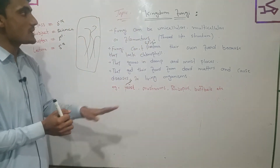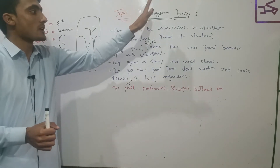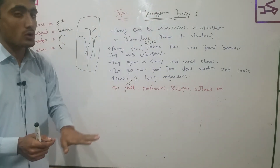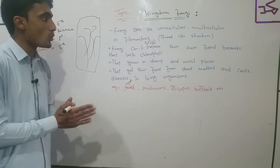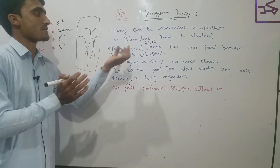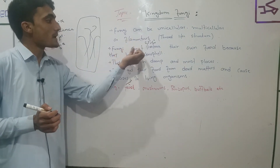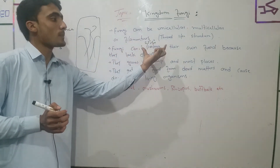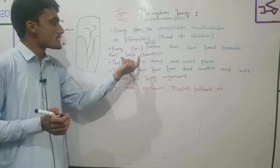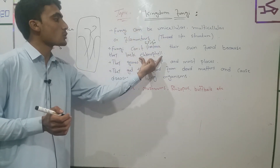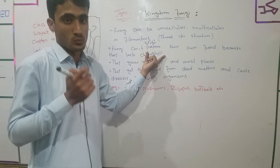So the examples of kingdom fungi we discussed include yeast, mushrooms, and Rhizopus. Kingdom fungi can be unicellular, multicellular, and filamentous in form. Fungi lack chlorophyll and are therefore heterotrophic.